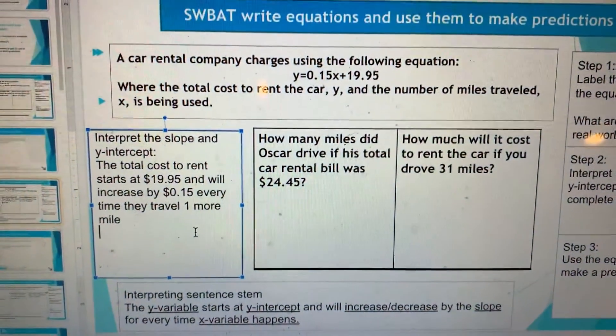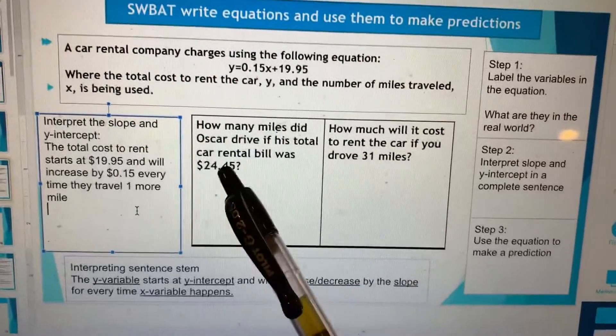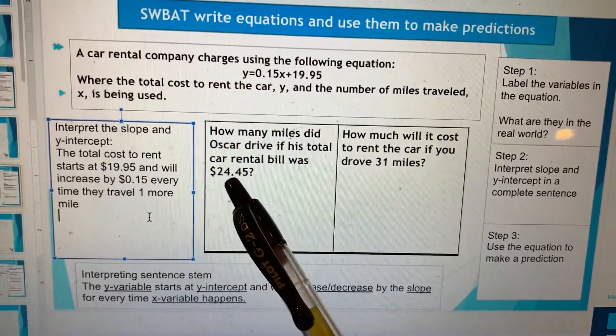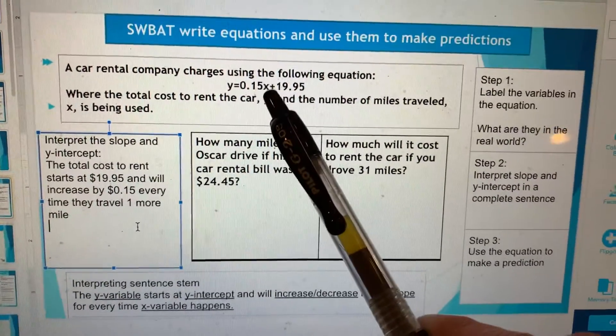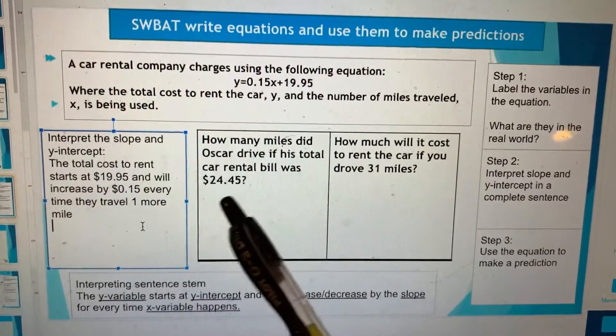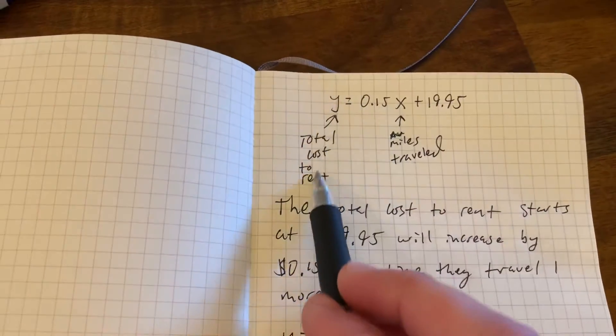How many miles did Oscar drive if his total car rental bill was $24.45? So we're going to ask, is that number the problem gave us an X idea or a Y idea? $24.95. $24.95, that sounds to me like the total cost to rent.